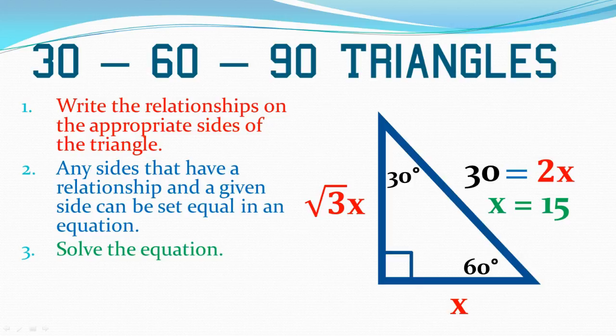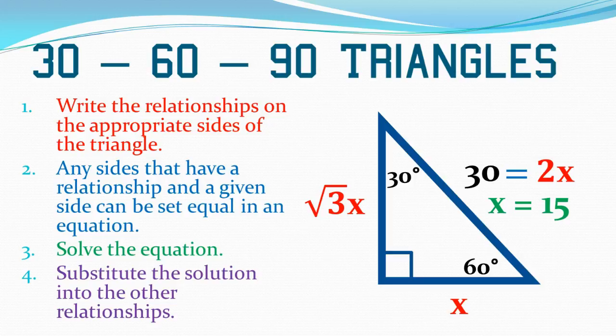With some problems, that's all they ask for is what does x equal. In others, they may ask you to find one or two of the sides. In this case, I just substitute the solution into the other relationships. We already know the hypotenuse is 30, which makes sense because 2x, or 2 times 15, is 30. I can also do x equals 15. It's just a simple plug-in. Square root of 3 times x. I would write this as 15 times square root of 3. Depending on the purpose of this measurement, you could also turn that directly into a decimal answer.